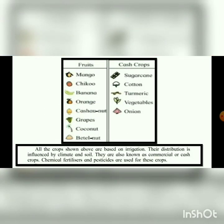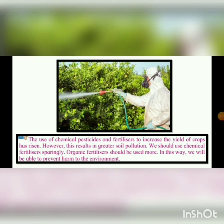The fruits and cash crops shown on the map are all based on irrigation — meaning water is brought through pumps rather than depending on rainfall. Their distribution is influenced by climate and soil. These are also known as commercial or cash crops. Chemical fertilizers and pesticides are used for these crops, and their use to increase yield has risen. However, this results in greater soil pollution, so we should use chemical fertilizers sparingly and organic fertilizers more.